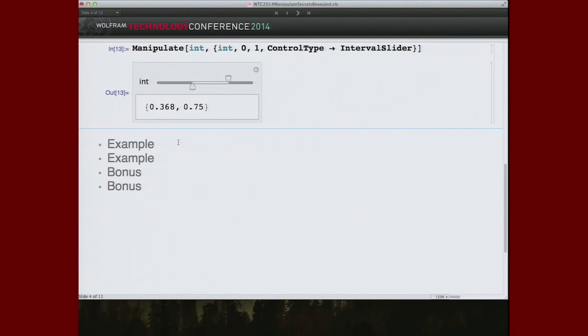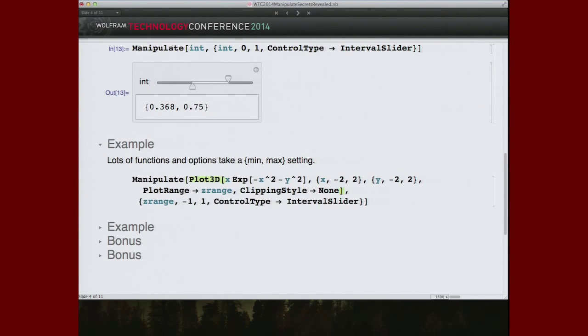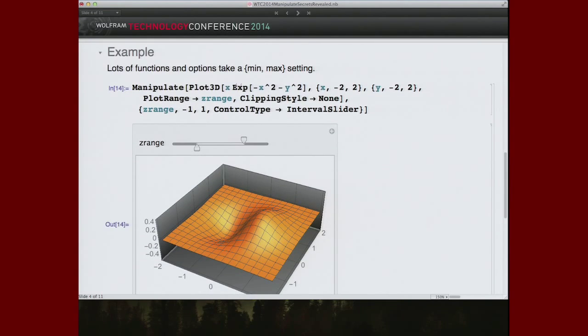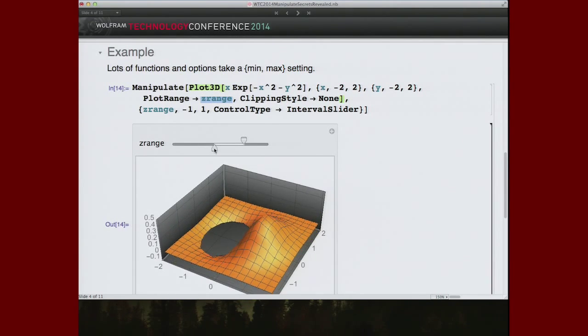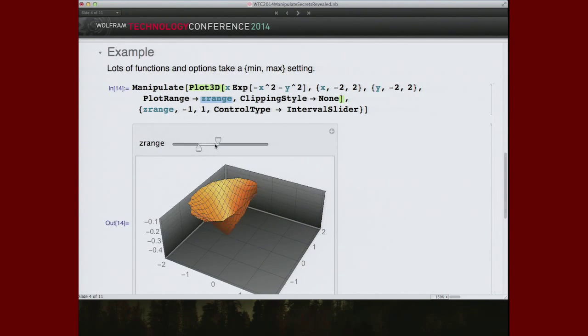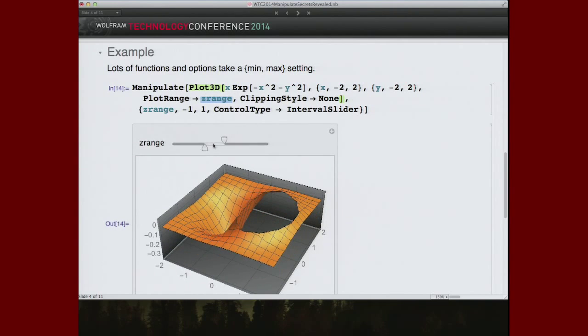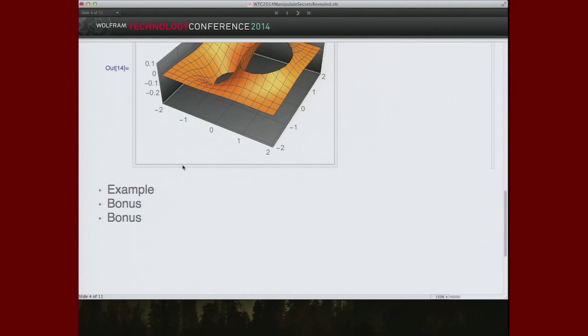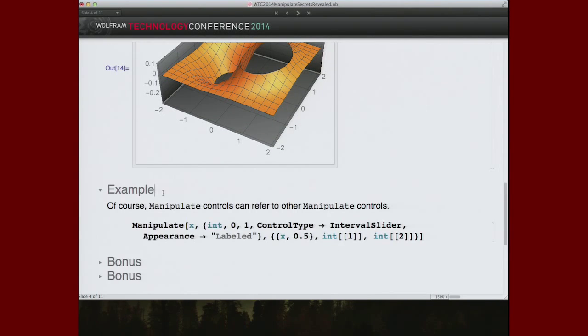It can do all the things that intervals can do. Here's an example where there is a control that affects the Z range of a 3D plot. Here we're specifying the Z range. Scanning through here. Okay, well, that's nice.